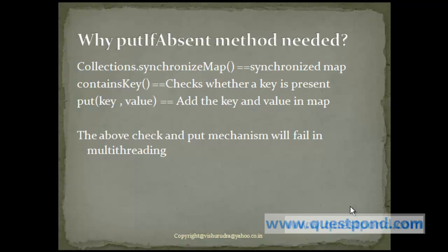In earlier map implementations like hashmap, which were not synchronized, if we wanted the map to be synchronized we made use of collections.synchronizedMap. Following this, to check whether a particular key is present in the map, we make use of map.containsKey, after which we can then put the key along with the value in case the key is not present. Now this implementation will fail in a multithreading environment.